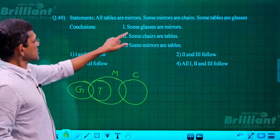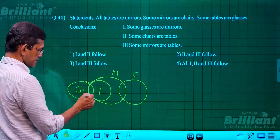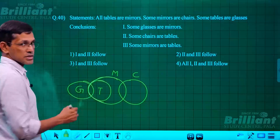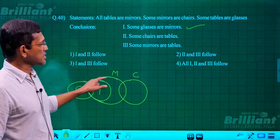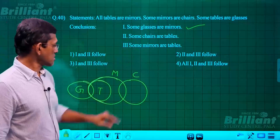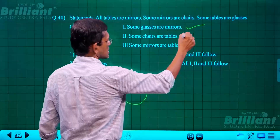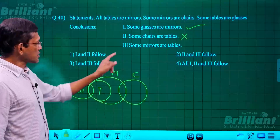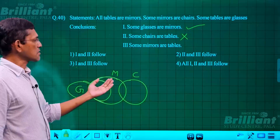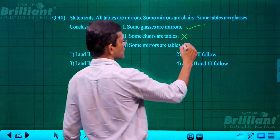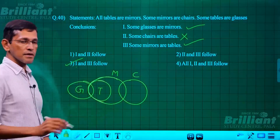Question 40 syllogism: conclusion — some glasses are mirrors. The mirror circle intersects with the glass circle, so this follows. Conclusion — some chairs are tables: there is no intersection between chair and table, so this doesn't follow. Conclusion — some mirrors are tables: all tables are mirrors, so naturally some mirrors are tables — this follows. Answer: only conclusions 1 and 3 follow.